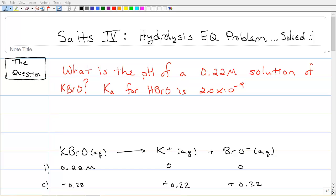What's the pH of a 0.22 molar solution of KBrO? So you're given the Ka for HBrO as 2.0 times 10 to the minus ninth.